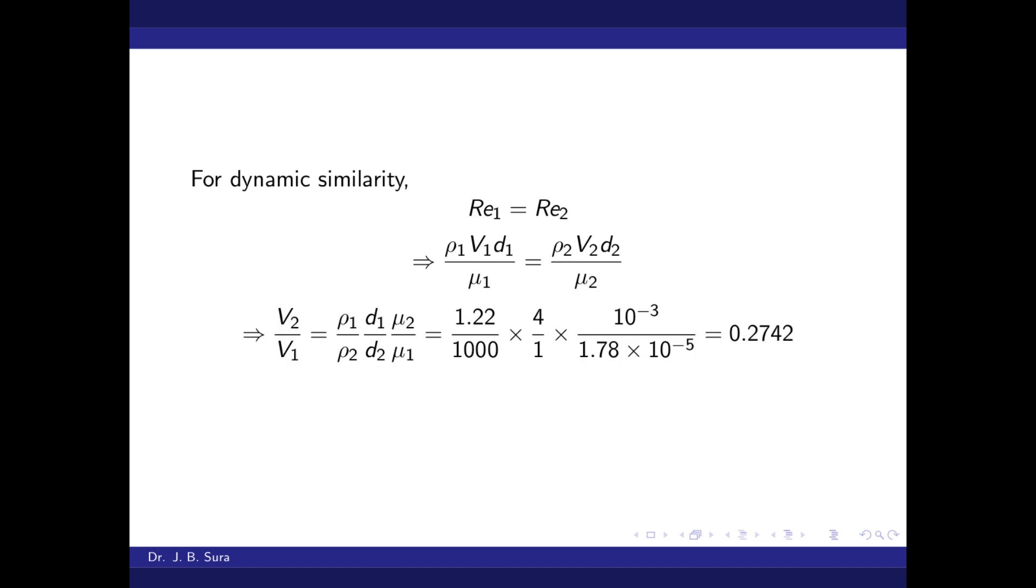For dynamic similarity, we should have the same Reynolds number, that is Re₁ for prototype equals Re₂ for model.